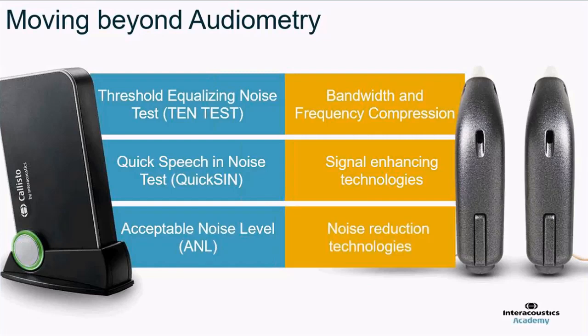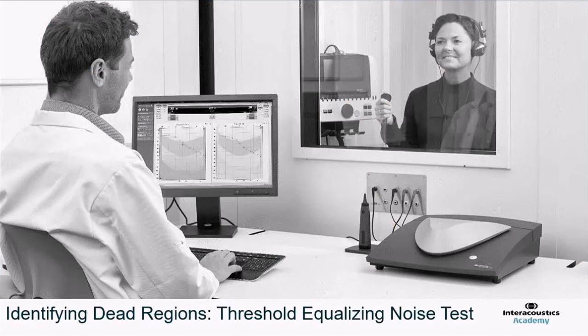And then lastly, the acceptable noise level test looks at what type of noise reduction algorithms the hearing aid needs. Do we need noise reduction? Do we need it set aggressively or mildly? The acceptable noise level test can give us some insights into how to set that up. So let's start with each of these tests, run through them, and then have a look at the implications of their results.